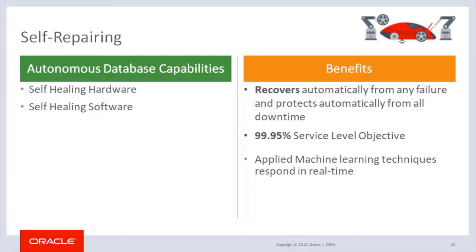Human error plays a significant role in many cases — whether it's a database table that was dropped, a cable that was accidentally unplugged, or a tape that was lost. Planned downtime for patching, upgrades, and maintenance represents an increasingly disproportionate percentage of overall downtime for many growing organizations. Oracle has successfully addressed all of these causes of downtime and disruption in on-premises environments for decades with the Maximum Availability Architecture, Oracle MAA.